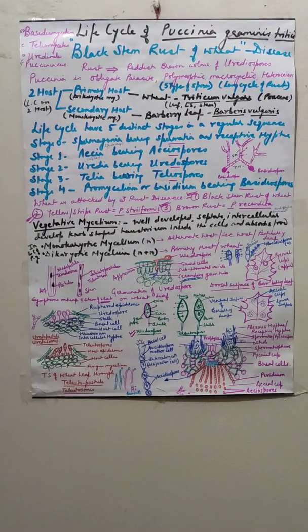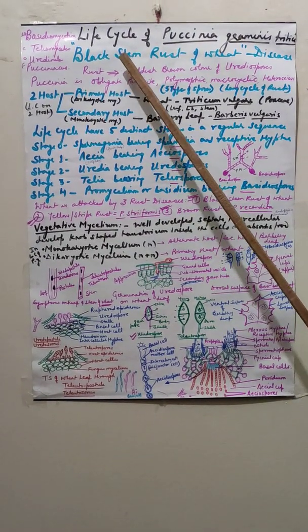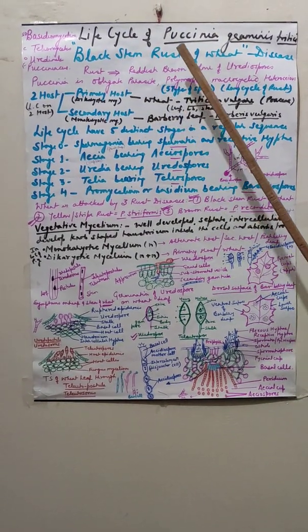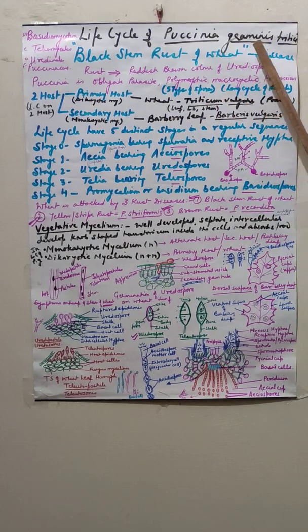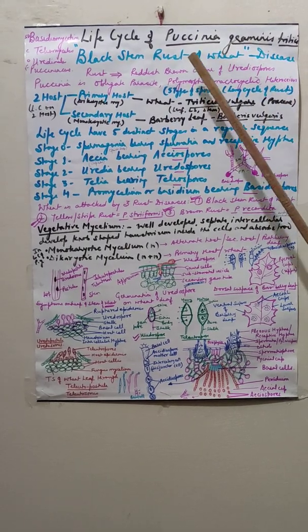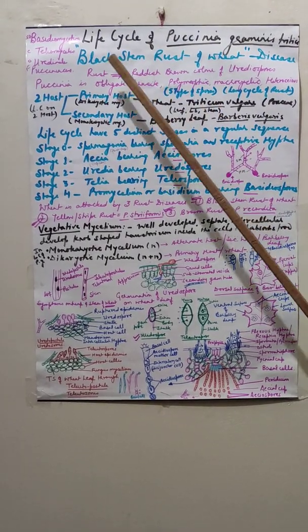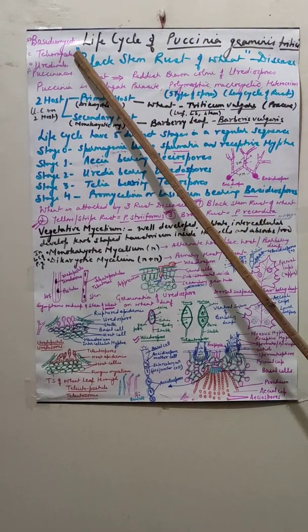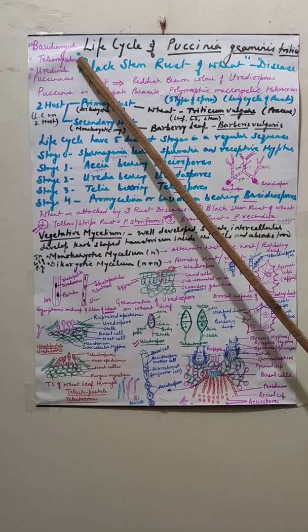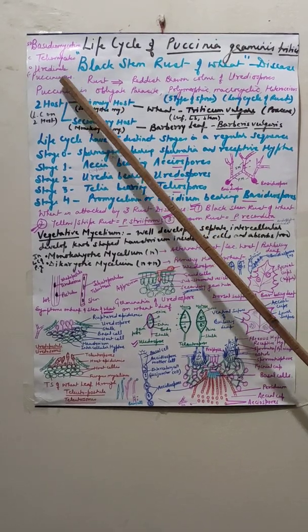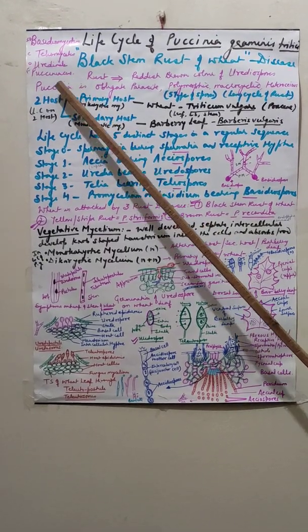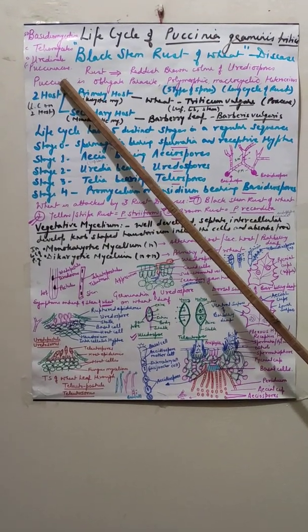Hello friends, today we will discuss the life cycle of Paxcinia graminis tritici. Paxcinia is a fungi which belongs to the subdivision Basidiomycotina and the order Uredinales, family Paxciniaceae.